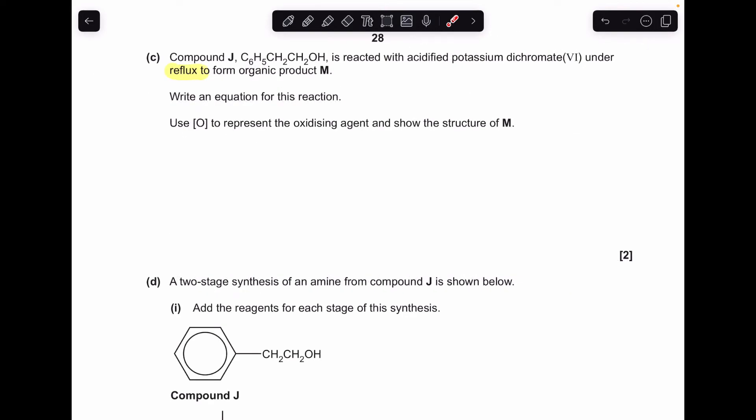Moving on to part C, compound J reacted with acidified potassium dichromate(VI) under reflux. You can see I've highlighted that to produce compound M. This is an alcohol, it's a primary alcohol, so when you oxidise a primary alcohol under reflux you get the carboxylic acid. There's the equation there. We need two moles of the oxidising agent because we've oxidised it first of all to the aldehyde and then to the carboxylic acid because it was reflux, but remember you only get one mole of H2O formed.